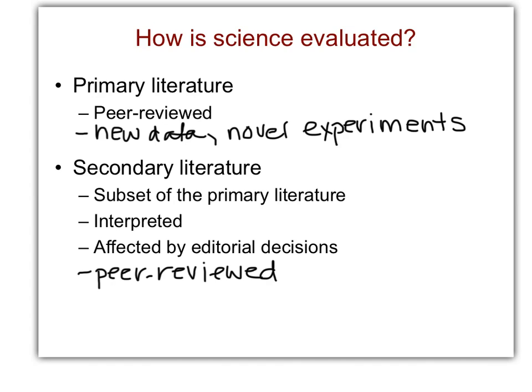How is science evaluated? We're going to talk about how real science ends up published, what science we should believe in, and what is a bunch of crap. Everything we know, or think we know, or is a hypothesis that's supported or set out of theory, has been done through experimentation. So how are those disseminated to the rest of the scientific community and to the world?